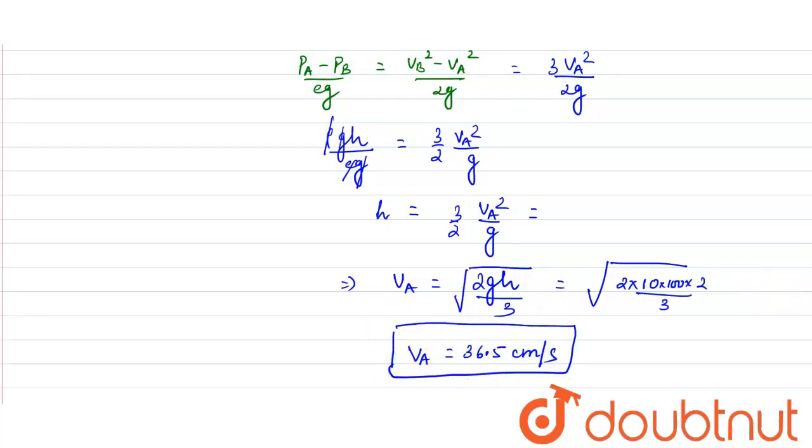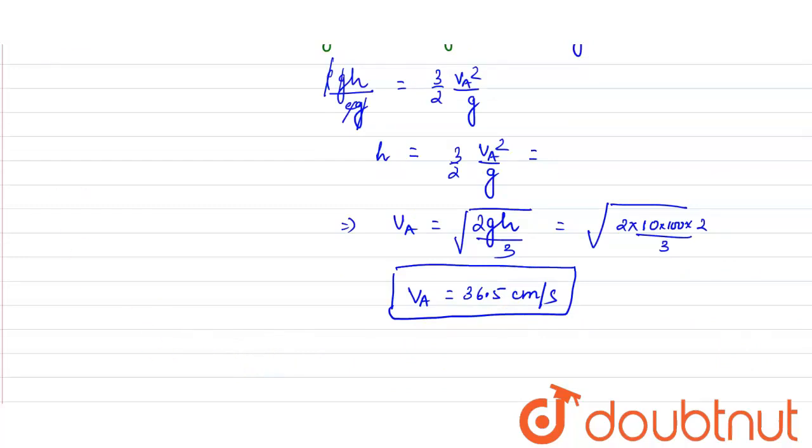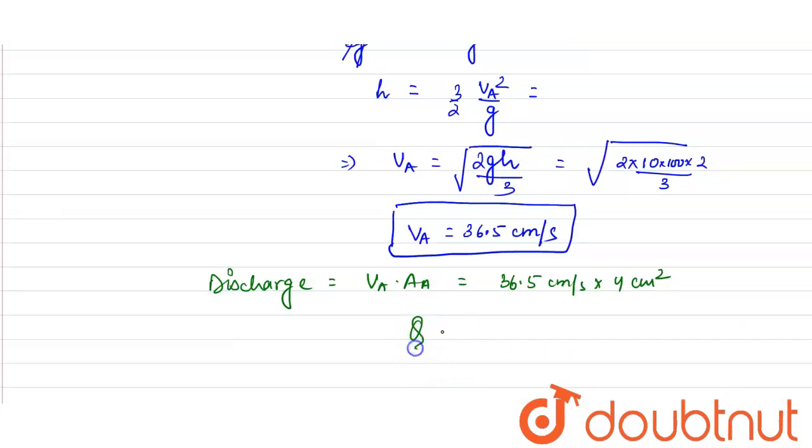So the discharge will be velocity at A into cross section area at A. So velocity at A is 36.5 cm/s into area at A, which is 4 cm². So from here, we get the discharge comes out to be 146 cm³/s, which is the required answer. Thank you.